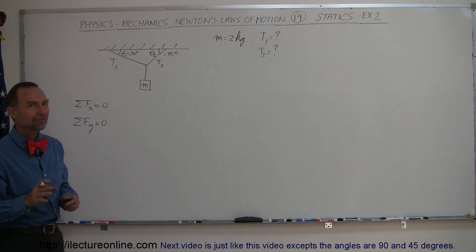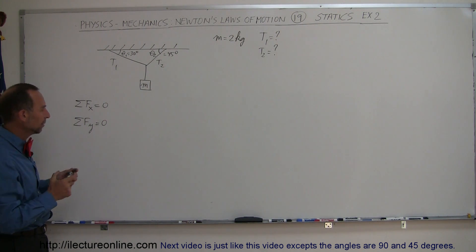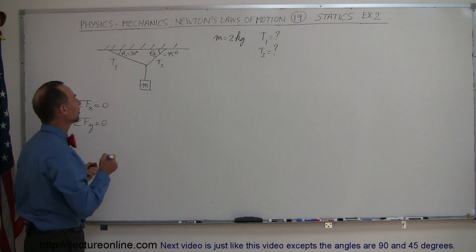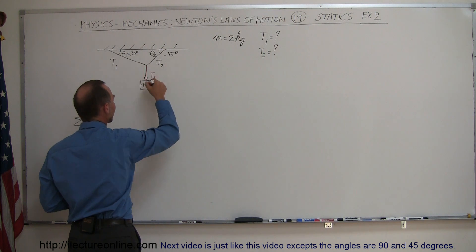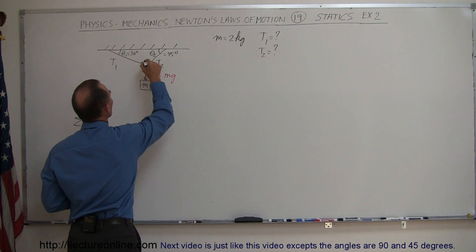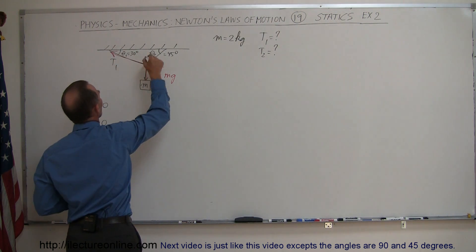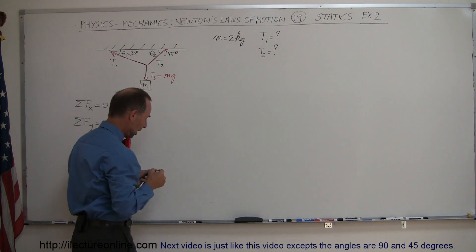We now have to identify the sum of all the forces in both the x and y directions. We have tension 3 acting downward, which is equal to the weight of the object. We have tension 1 pulling one way, and tension 2 pulling the other way.